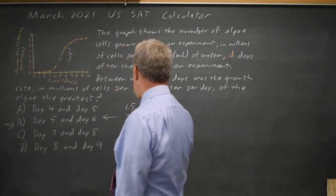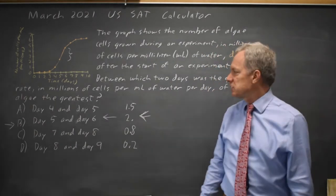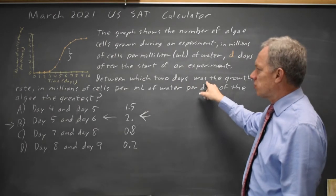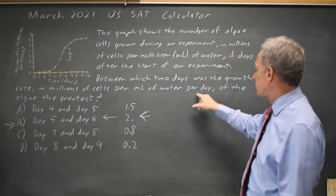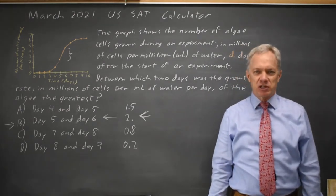The largest of the four is two and again that's from days five to six. Rereading the question they are asking between which two days was the growth rate in millions of cells per milliliter of water per day of the algae the greatest and we did choose the day with the greatest growth rate.